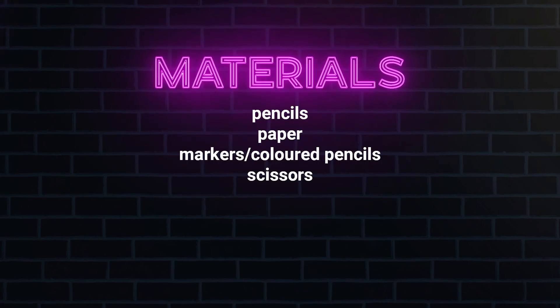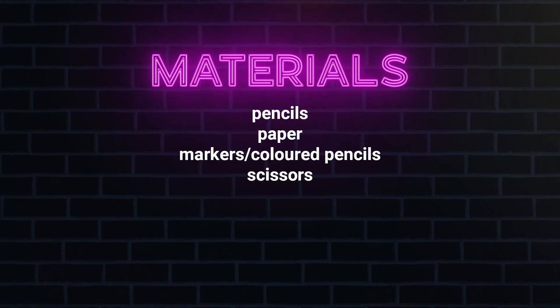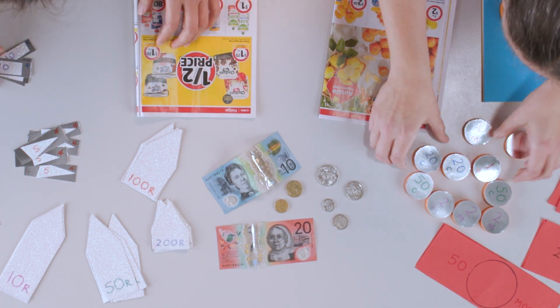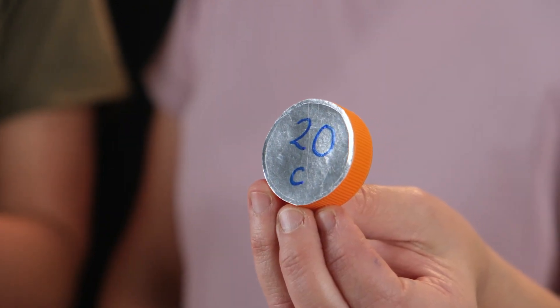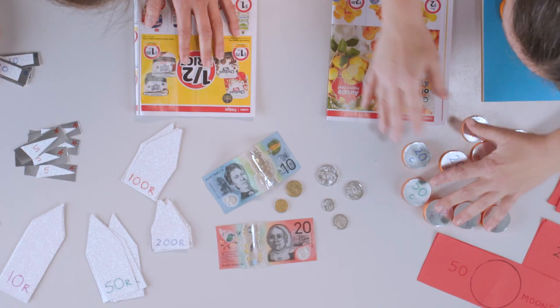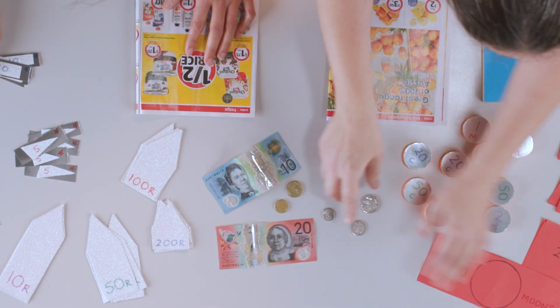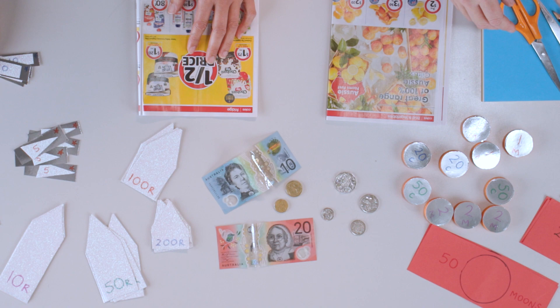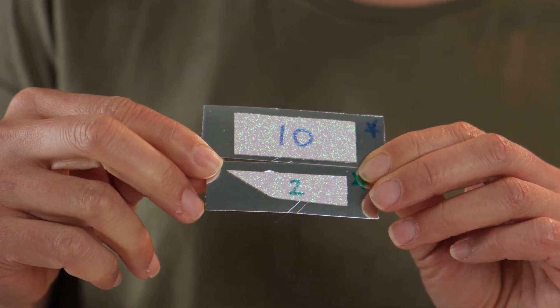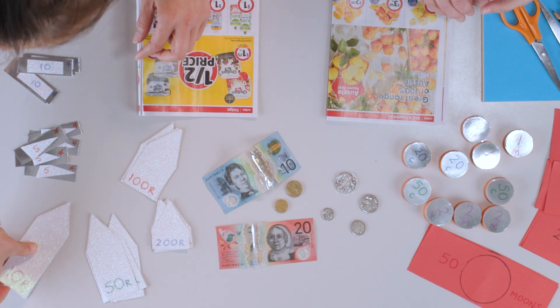We're going to show you some examples of currencies that we've just quickly made up — something like what your students might create. Using bottle tops and paper, I've got craters and moons. The craters represent smaller currency, a bit like our coins, and the bigger ones are for buying things like shoes and a couch on Mars. Similarly, I've got stars representing smaller values and rockets representing the larger values.